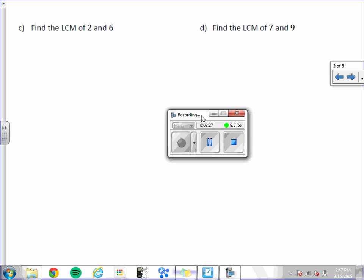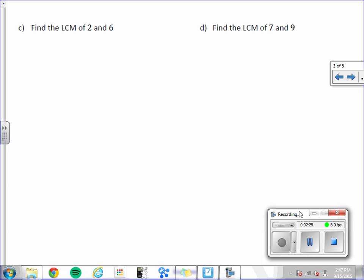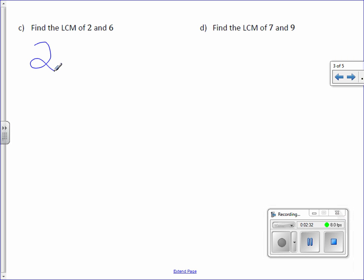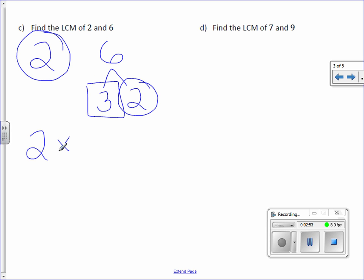Letter C, find the LCM of 2 and 6. 2 is a prime factor, so there's nothing we can do there. 6 can be written as 3 times 2. We have a 2 in common, so we write that first. Nothing else is in common, so we bring down the leftovers, which is just a 3 in this case. 2 times 3 is 6, so the LCM is 6.